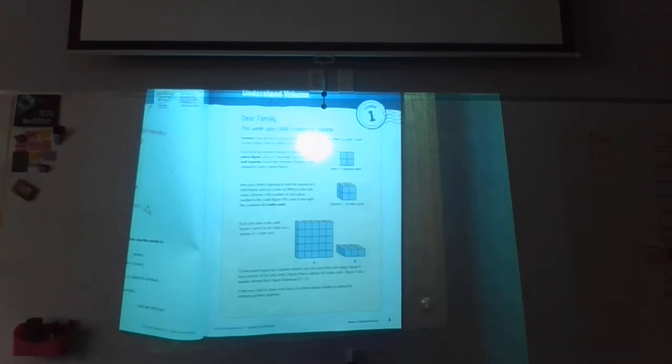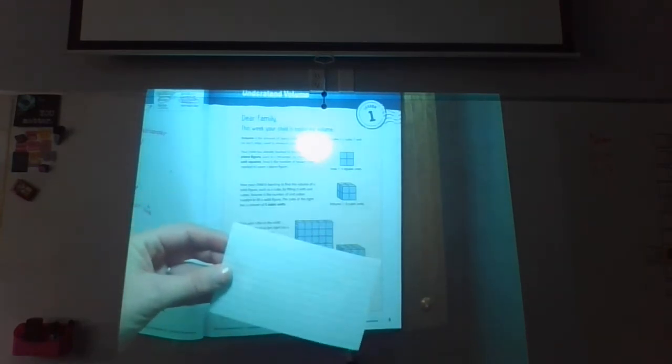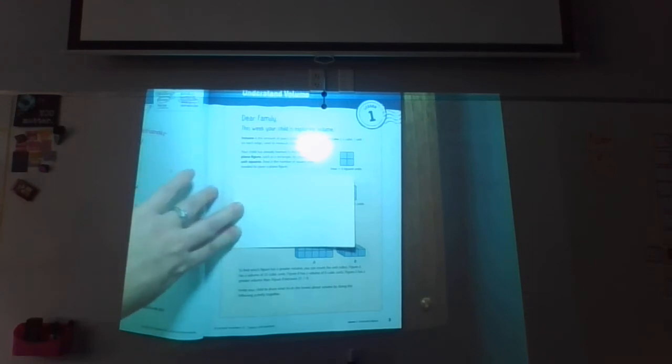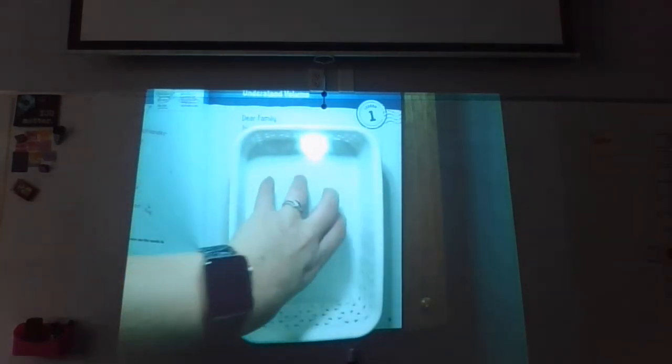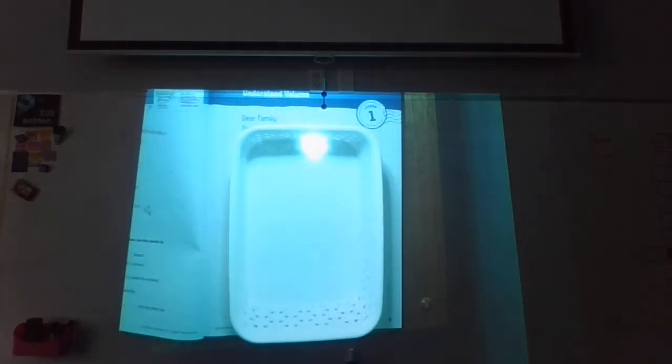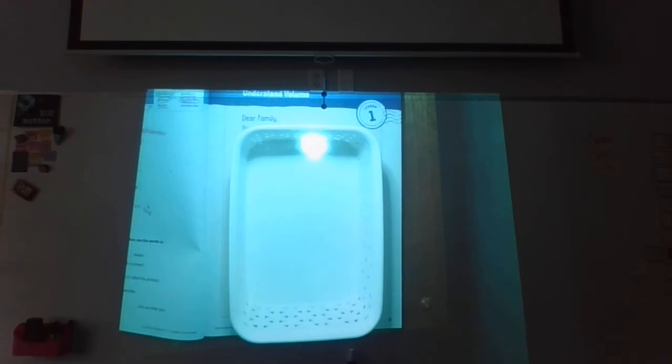So, for example, this is a plane figure. We have an index card here, right? It's flat. It's two-dimensional. So when we have something like this, we're finding the area of it. This is 3 inches by 4 inches. So the area would be 12 square inches. However, when we're trying to find volume, we're trying to find out how much space is inside of an object. So the volume would be how much we can put inside of this. And we use unit cubes to figure that out.